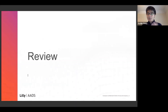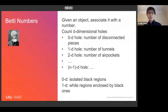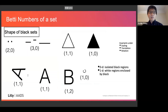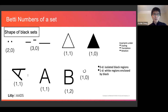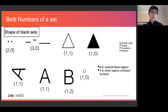For this audience, we are interested in beta numbers — zero-dimensional holes, one-dimensional holes, two-dimensional holes, and so on. In my work, we focus mostly on images. I want to set up some background notation so we have the same language. I'm always looking at the shape of the black set. If you count the beta number for this object, that would be two; for the letter B, that would be two — so I'm focusing on the black set.